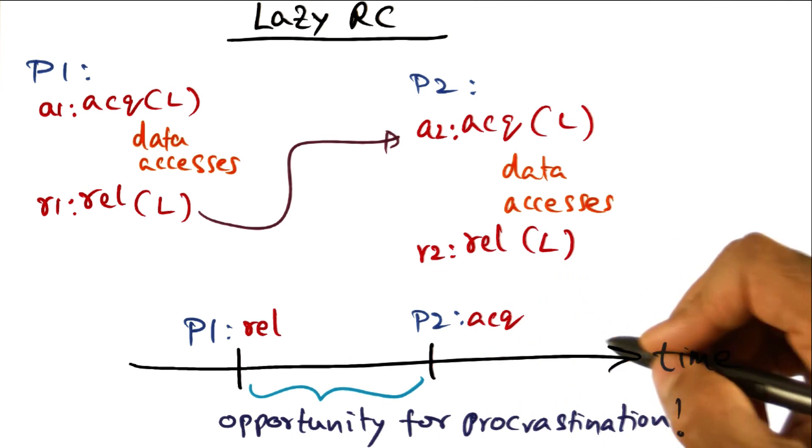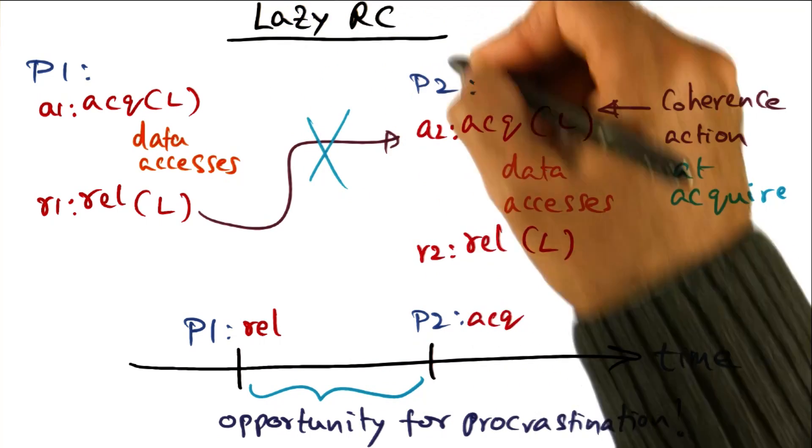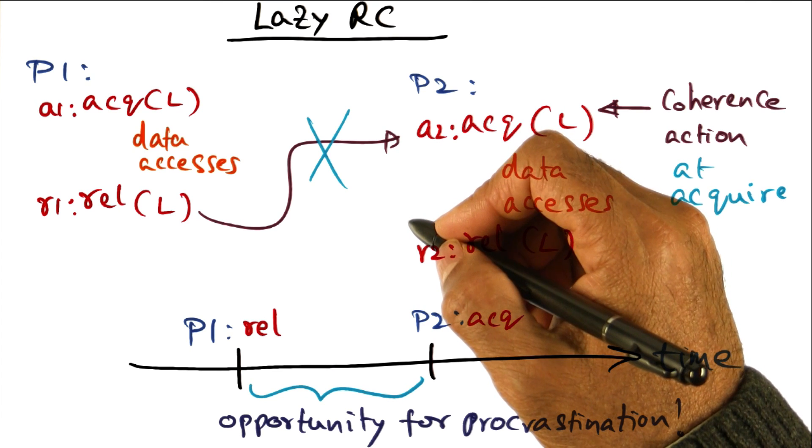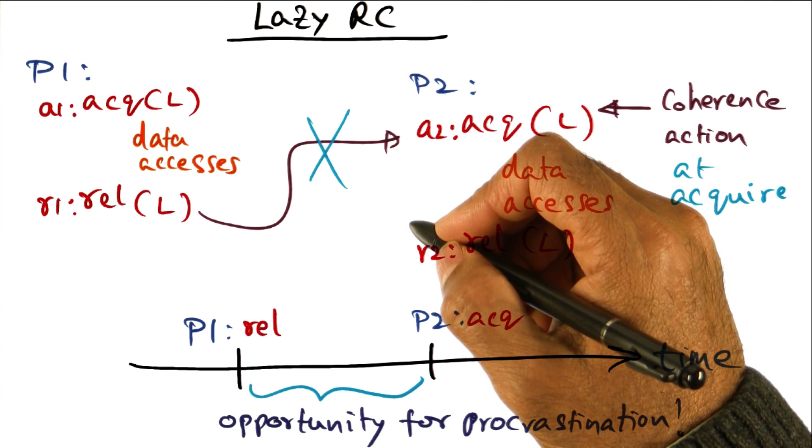So here again, there is an opportunity for procrastination. Lazy RC is another instance where procrastination may actually help in optimizing the system performance.